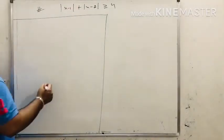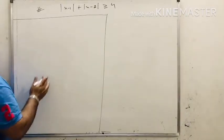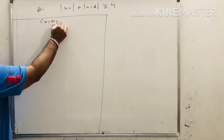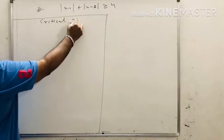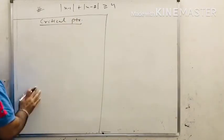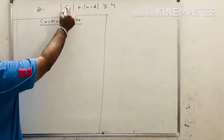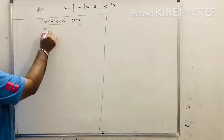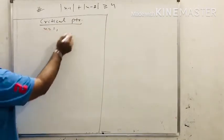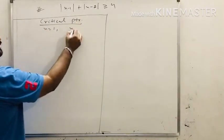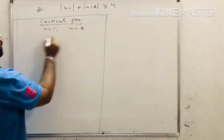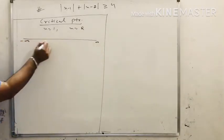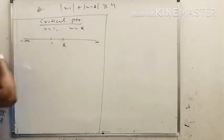This is the last concept of modulus function. In this question, first we find the critical points. Setting x minus 1 equals 0 gives x equals 1; setting x minus 2 equals 0 gives x equals 2. So the critical points are 1 and 2. Draw a number line from minus infinity to infinity with points 1 and 2 marked.